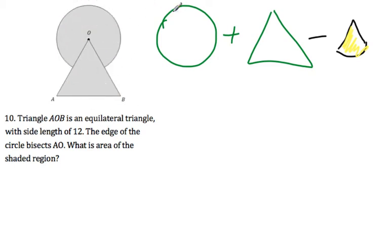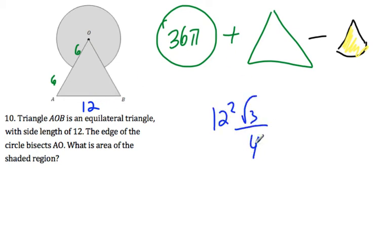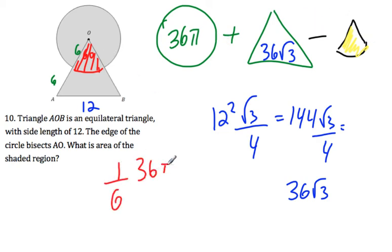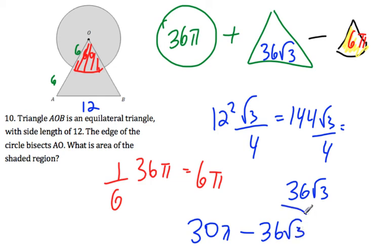The segments are 6 and 6, so the circle radius is 6 and the whole circle is 36 pi. The equilateral triangle has side 12, so area equals 12 squared times radical 3 over 4, which is 144 radical 3 over 4, equaling 36 radical 3. Since it's an equilateral triangle, the sector angle is 60 degrees, which is one-sixth of 36 pi, equaling 6 pi. So: 36 pi plus 36 radical 3 minus 6 pi equals 30 pi plus 36 radical 3.